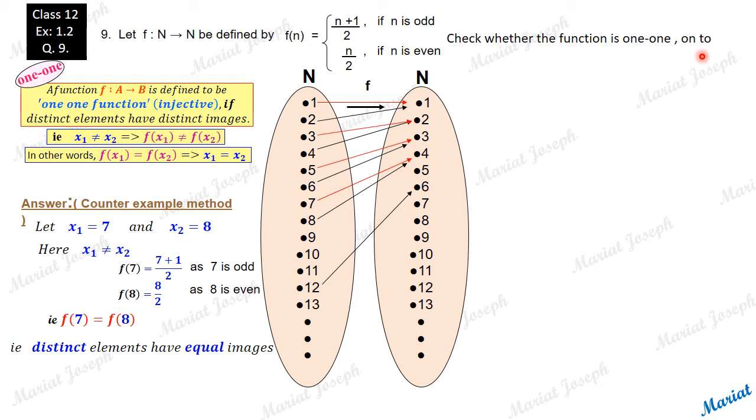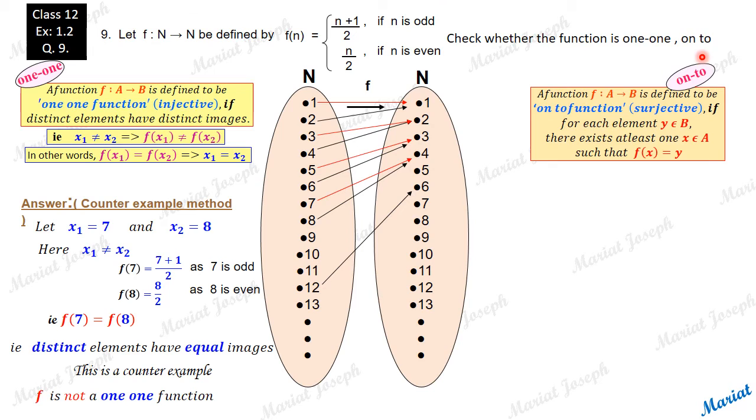Let us see whether it is an onto function. What is an onto function? A function defined from set A to set B is called an onto function if for each element taken in the co-domain, there should exist at least one x in the domain such that that x's image is the y taken out here.